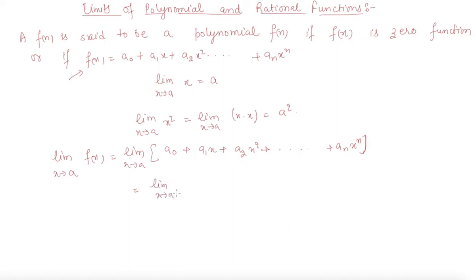Limit x tends to a of a₀ plus limit x tends to a of a₁x plus limit x tends to a of a₂x² plus limit x tends to a of aₙxⁿ. This is a constant, a₁ comes out as a constant, we get a₁ limit x tends to a of x, a₂ limit x tends to a of x², plus limit x tends to a where aₙ comes out as constant times xⁿ.